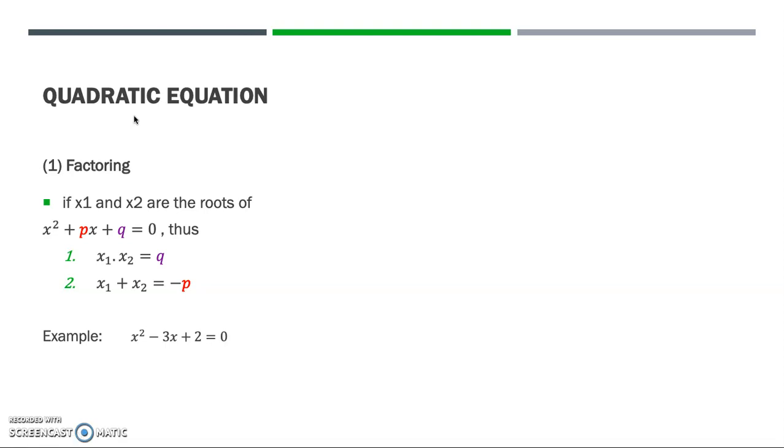First, we look at the factors of 2, which would be simple. The factors of 2 are 1 and 2. Second, 1 and 2 must add to -3. Thus, we take them as -1 and -2. From the equation, we factor this equation to become (x - 1)(x - 2) = 0. And thus, the roots of the equation are x = 1 and x = 2. That is the solution for this example.